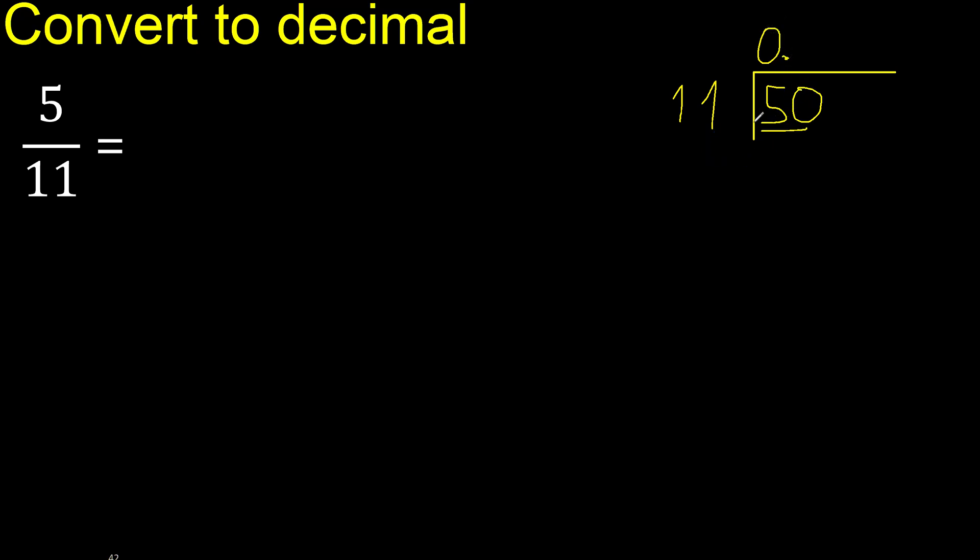50 is not less. Therefore with 50, 11 multiplied by which number is nearest to 50 but not greater. 11 multiplied by 5 is 55, is greater. Multiply by 4, 44, is not greater. 50 minus 44 is 6, next.